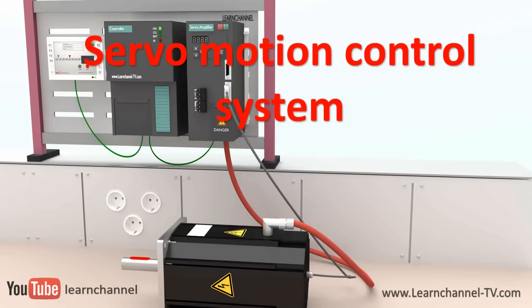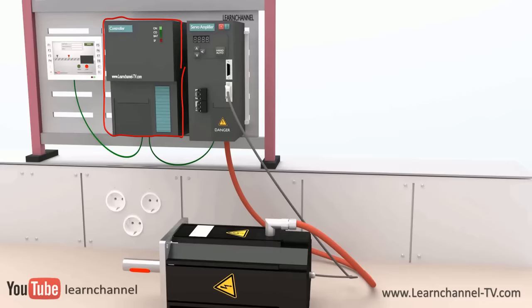The servo controller sends low voltage control signals for position, speed, or torque to the servo amplifier. Now these commands are amplified up to high power, which the motor can use.